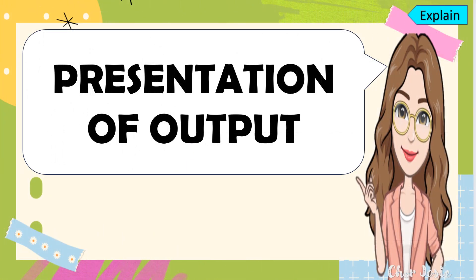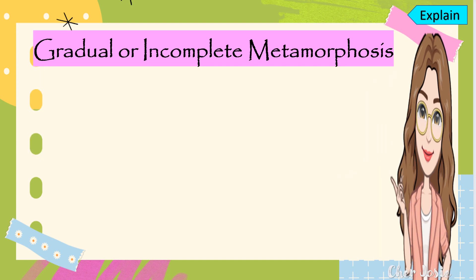It's time for your group presentation. Good job, kids, for a job well done in your group activity. And now, let's discuss it one by one. The second type of metamorphosis is the gradual or incomplete metamorphosis.